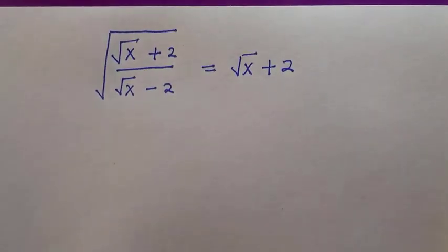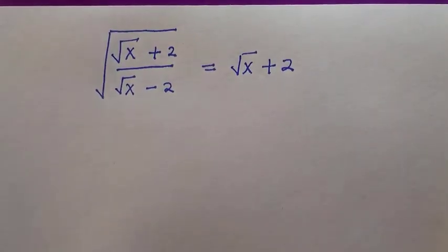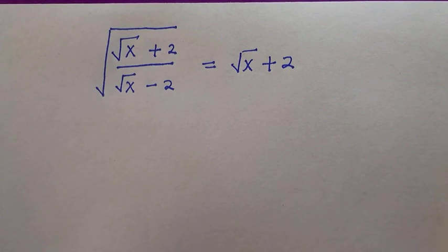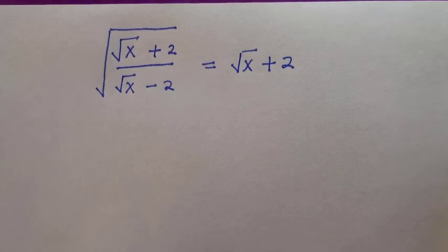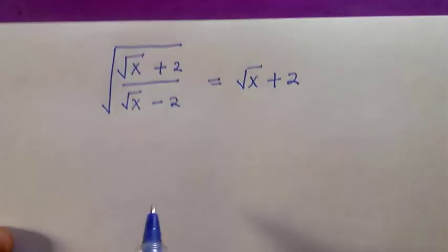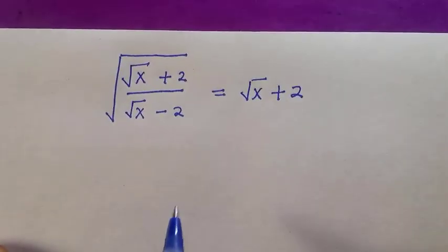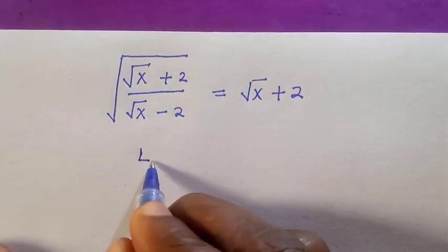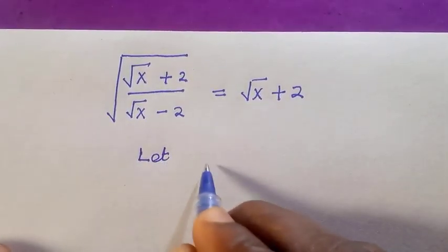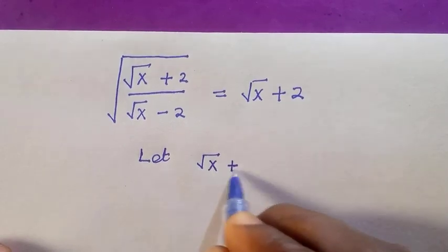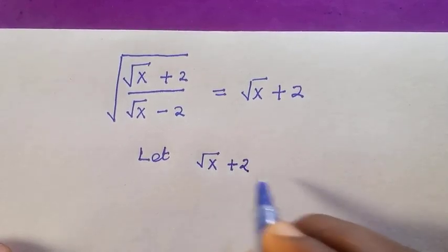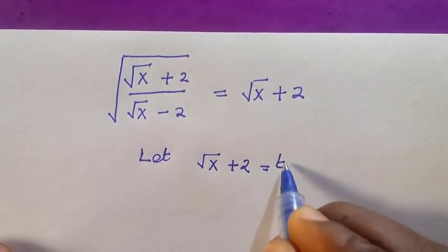Welcome to this class. In this tutorial we want to solve radical equations. We could first take the square root side and keep expanding, but that would be a long process. Here is the short method of solving this. We are going to let root x plus two be equal to a letter, which is t.